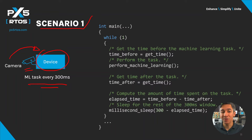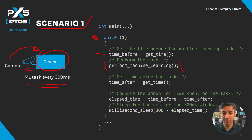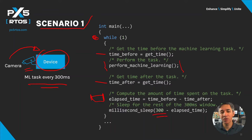According to this pseudocode, we would have a loop: we get a timestamp before starting the task, we perform the machine learning task, take another timestamp, compute the delta between the initial time and the end time, and see how much is left of the 300 milliseconds so we can put the application to sleep.